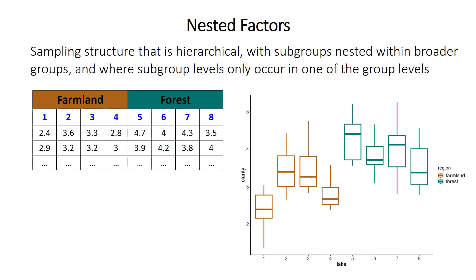So what are nested factors? It's a sampling structure that's hierarchical. There are higher level or broader groups, and they have smaller subgroups nested within them. Here's an example where the higher level group is landscape type — whether it's farmland or forest — and the nested subgroups are the individual lakes, one through eight. Lake one has a bunch of measurements in it, and lake two has a bunch of measurements, and so forth.